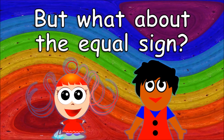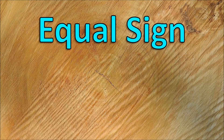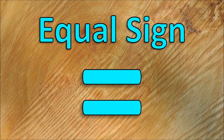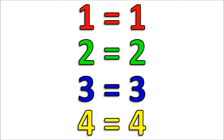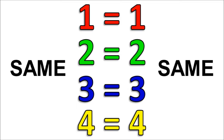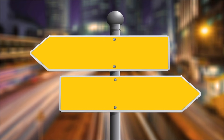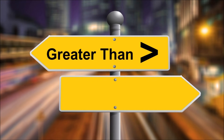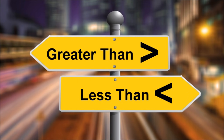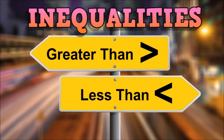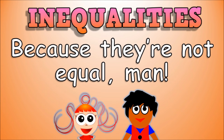But what about the equal sign? Here's what it means when you see the equal sign: the value of the numbers is the same on both sides. But on the other hand, greater than and less than are called inequalities, because they're not equal.